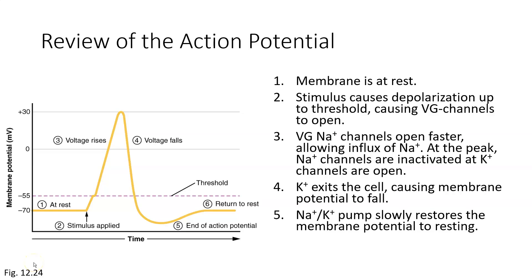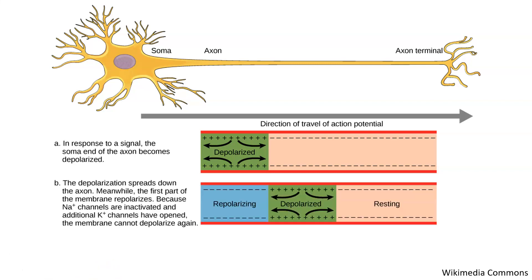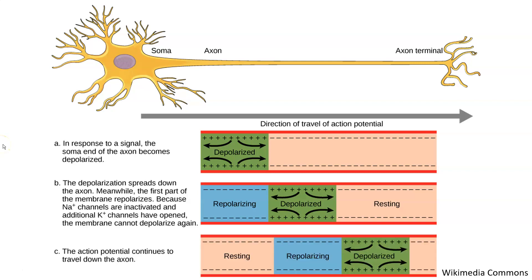Now that we've learned about the action potential, let's zoom out and see how it travels down the axon. When sodium ions enter the axonal membrane, they spread out to surrounding areas. As sodium ions move around, they depolarize nearby areas as well. If the depolarization is strong enough to reach the threshold, it triggers the action potential in the area downstream. This cycle propagates all the way until we reach the axon terminal.